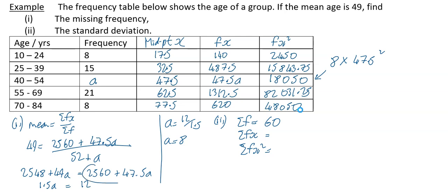Well, we already know over here what it was, so just put A into this would be the easiest way. So 2560 plus 47.5 times your 8, and if you do that, what I got for that is 2940. And then I will just add up these numerical values, so I'm doing 2450 plus 15843.75 plus 18050 plus 82031.25 plus 48050, press equals, and what I have got is 166425. So you're now good to go with your formula.